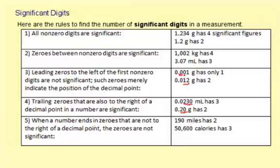When a number ends in zeros that are not to the right of the decimal point, the zeros are not significant. So 190 only has two because of the one and the nine. And 50,600 has three because of 506.